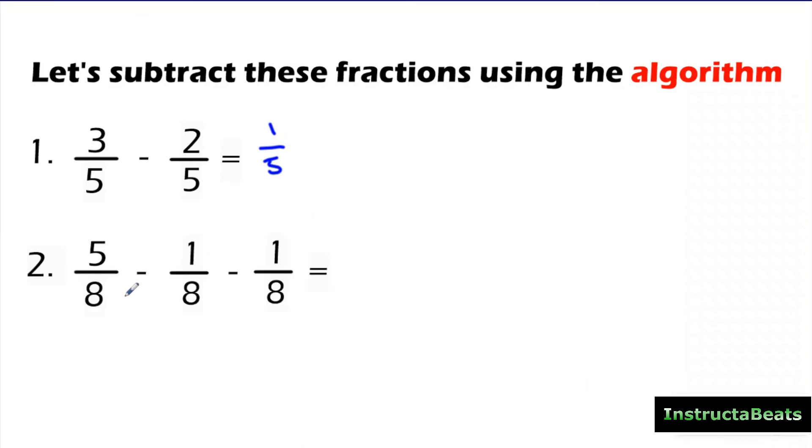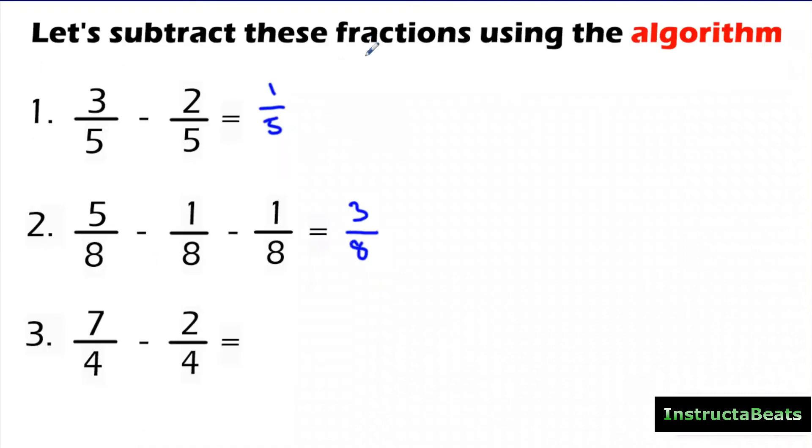So 5 minus 1 is 4, minus 1 is 3. So 5/8 minus 1/8 minus 1/8 would be 3/8. You could also just combine these to do 2/8, right? And use your number knowledge and your number sense to just say 5 minus 2/8, which is still 3/8. So you can do this a lot of different ways just using the same skills that you always have used with whole numbers. Okay?